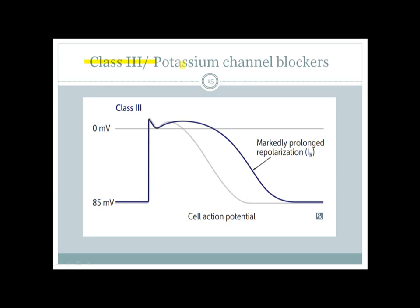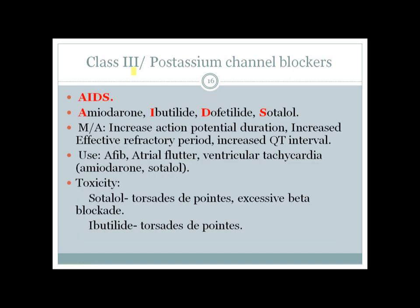Class 3 agents — potassium channel blockers — act on the cardiac muscle action potential, unlike beta blockers. They block phase 3, the rapid repolarization phase mediated by potassium efflux, markedly prolonging the repolarization phase. This increases action potential duration and effective refractory period. The class 3 drugs are remembered as 'AIDS': Amiodarone, Ibutilide, Dofetilide, and Sotalol.